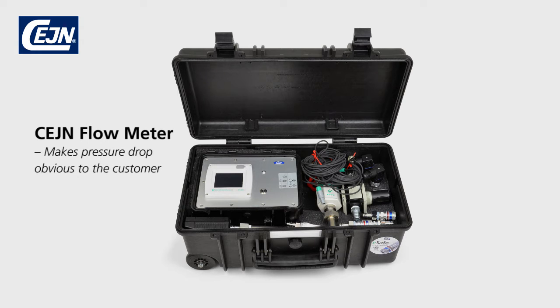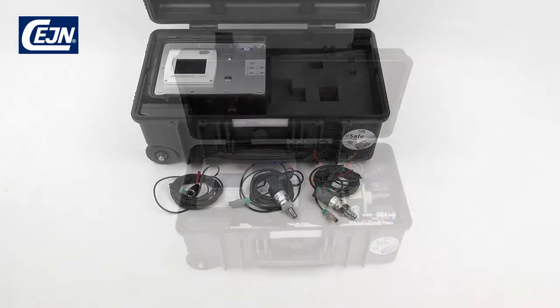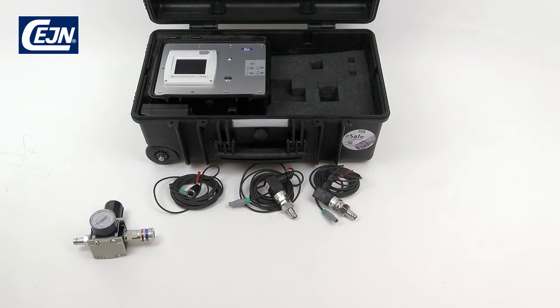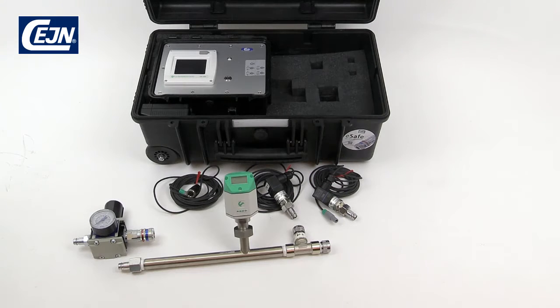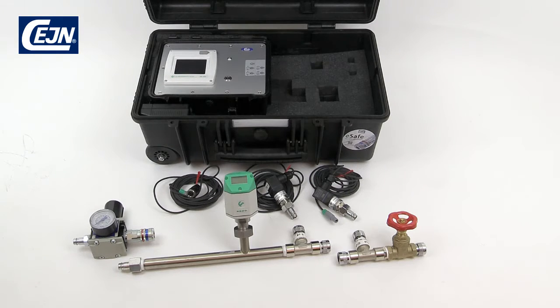I'm going to present the flow meter. We'll start by laying out all the components on the table. Here we have three different cables, the regulator, the flow pipe, the end of the flow pipe, and the product we're going to measure, plus the silencer.